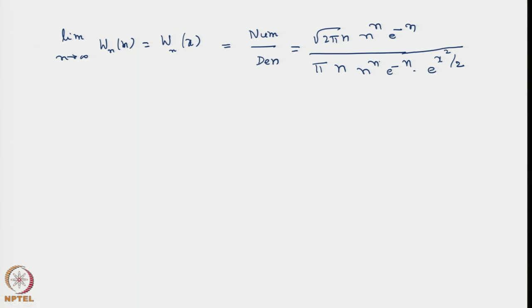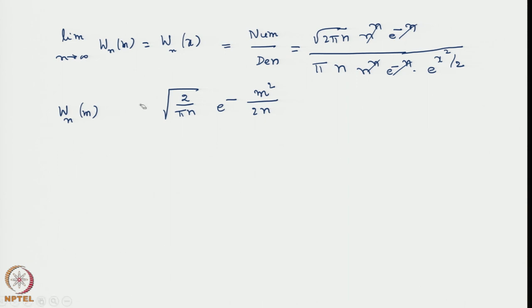When we carefully simplify, all the terms cancel — n to the power n will cancel, e to the power minus n will cancel. The root 2 pi extends to include n, so 1 by root 2 will remain but 1 by root pi n will come. So you will have basically square root of 2 pi n times e to the power minus x squared by 2. This can be re-expressed in terms of the original variable as e to the power minus m squared by 2n. This is the asymptotic limit as n tends to infinity, m tends to infinity, and we have arrived at a very neat expression which is, of course, the Gaussian or normal distribution.